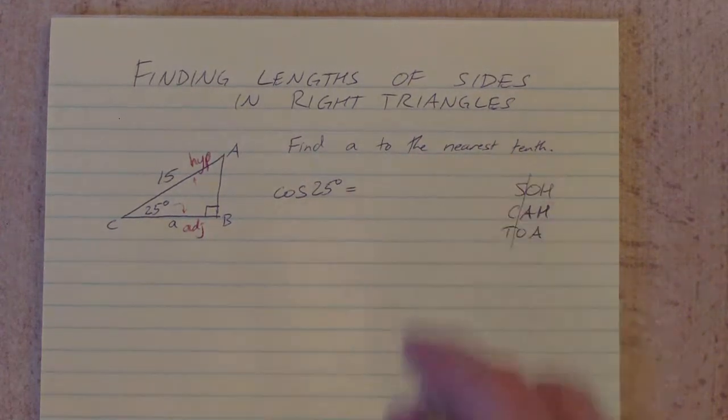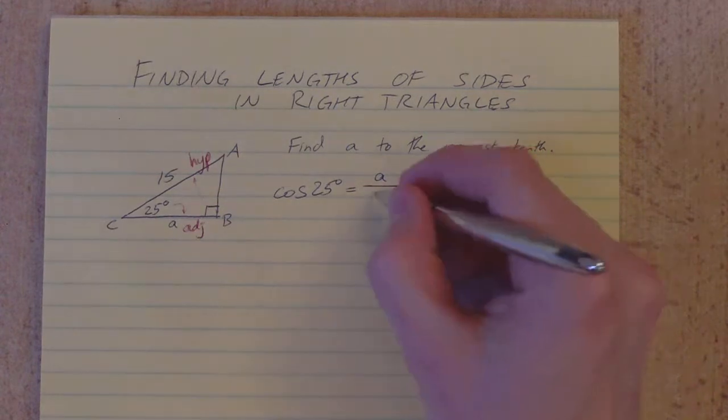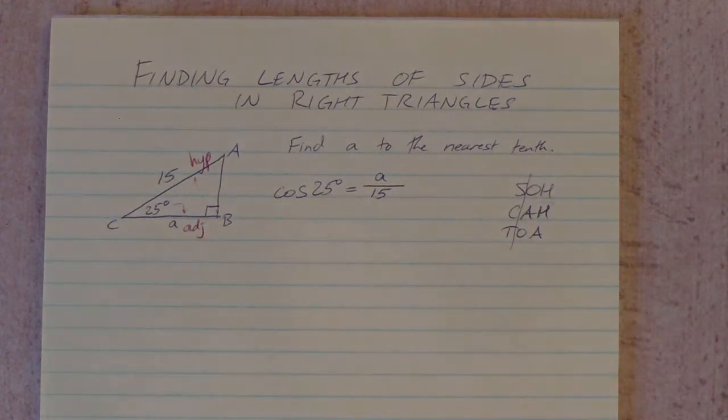is the length of the adjacent side, A, which I don't know. I'm trying to find, divided by the length of the hypotenuse, which is 15. Now I've got an equation I can solve to find that length, A.